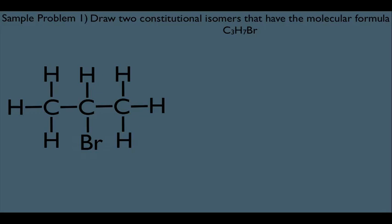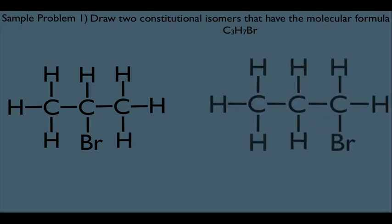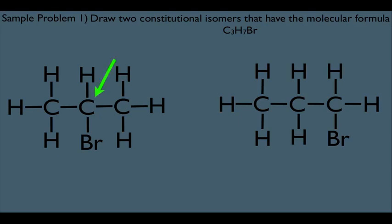How do we generate a second constitutional isomer? All we have to do is make different connections. The easiest one here would be to connect the Br differently. In the molecule on the left, I have the Br connected to the central carbon of the chain, and over here I have the Br connected to an end carbon in the chain. That constitutes a different connection, making these molecules constitutional isomers of each other. In other online lectures, we'll see that these molecules not only differ structurally, but will react differently and have different geometries — making them separate and individual. This is going to be important to know later on in organic chemistry.